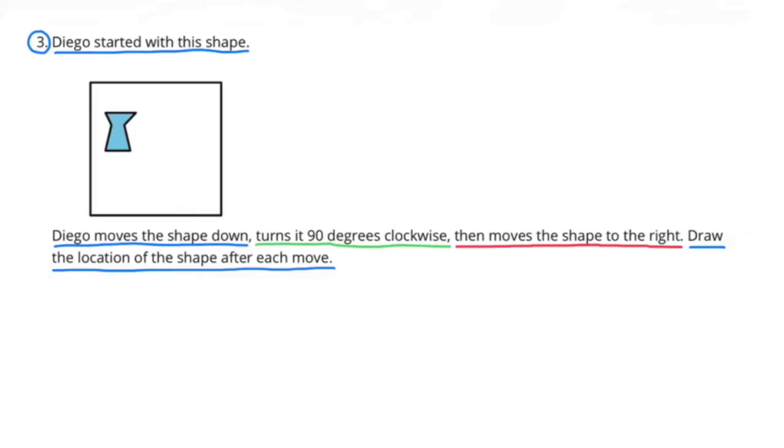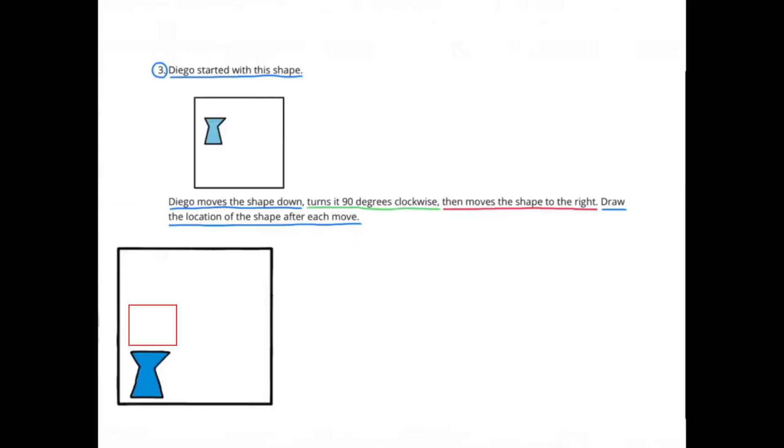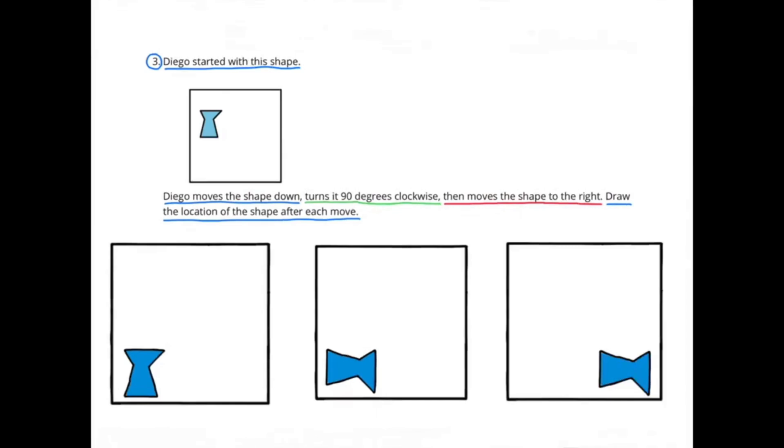Number 3. Diego started with this shape. Diego moves the shape down, turns it 90 degrees clockwise, then moves the shape to the right. Draw the location of the shape after each move.